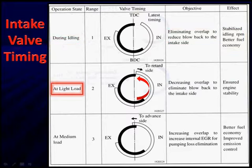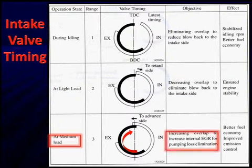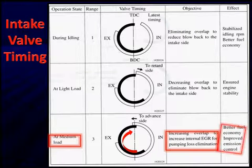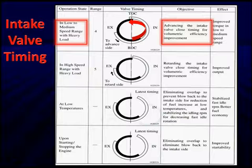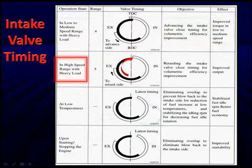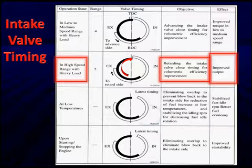At light load, we decrease overlap to eliminate blowback to the intake side, ensuring good engine stability. At medium speed, we increase overlap to increase internal EGR and reduce pumping losses, giving better fuel economy and improved emission controls. In low to medium speed with heavy load going up a hill, we advance the intake valve closing for volumetric efficiency improvement, giving improved torque in low and mid-range performance. At high speed with heavy load, we retard the intake timing to close the valve for volumetric efficiency improvements and improved output. Volumetric efficiency requirements are changing with engine speed all the time.